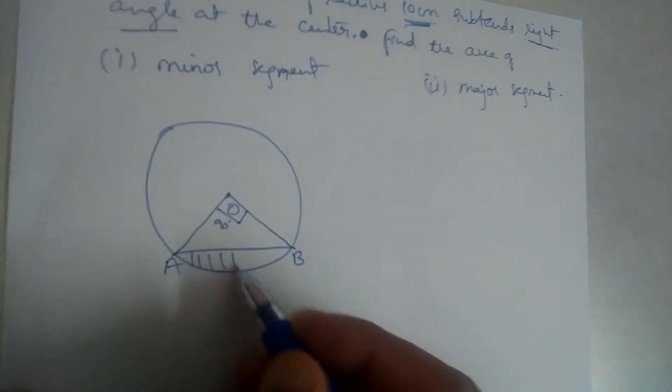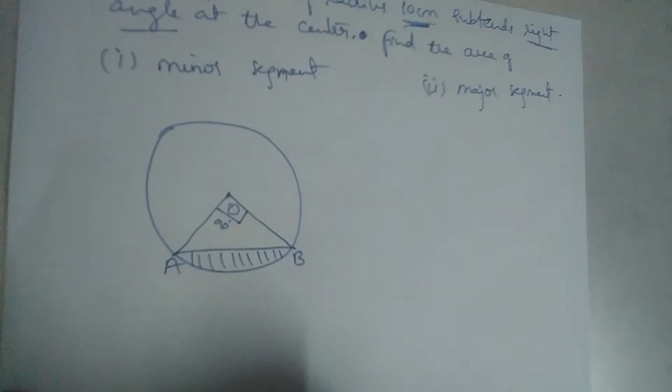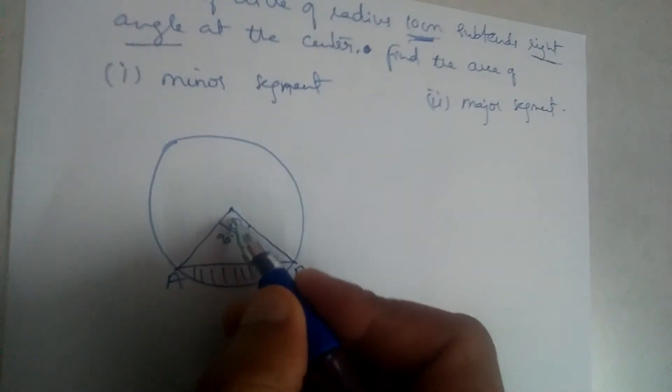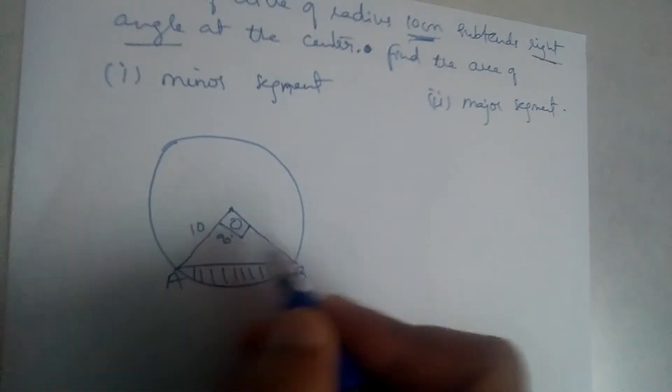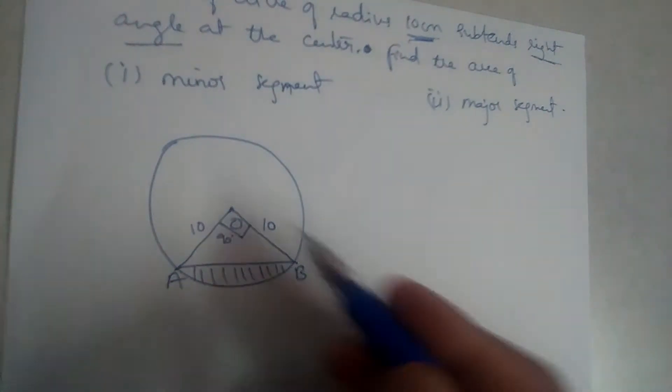We should find the minor segment as well as the major segment. So let O be the center of the circle. So what is the radius? 10. So this will also be 10.